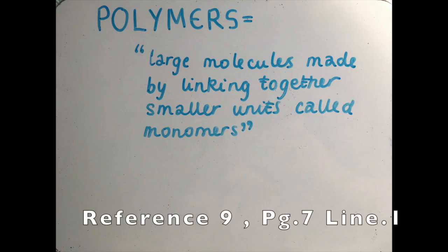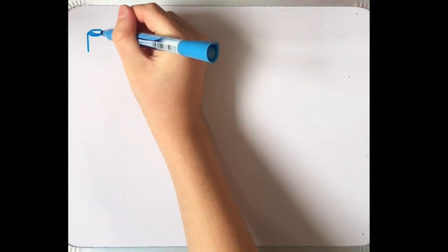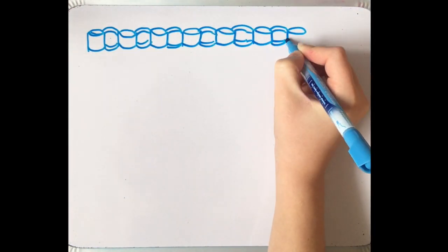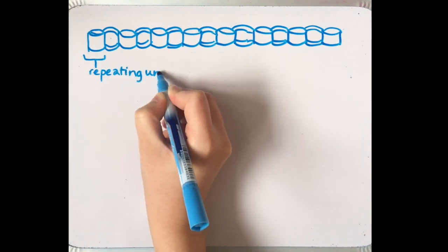Polymers are large molecules made by linking together repeating units of small units called monomers. One analogy for polymers is a paper chain you would see at a child's birthday party where each ring of paper corresponds to a repeating unit in the polymer chain.